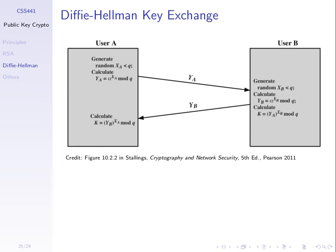Because of the difficulty of solving discrete logarithms, an attacker — even if they know alpha, Q, YA, and YB — cannot find XA or XB and therefore cannot find K. So K is the secret that is exchanged; A and B have it and the attacker cannot find it. This assumes we're using large values: Q must be very large so the private value X can be very large. In that case, Diffie-Hellman key exchange is considered secure.